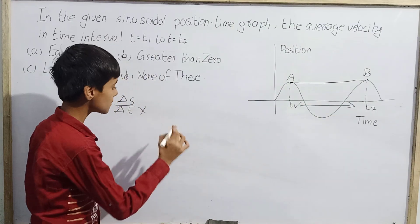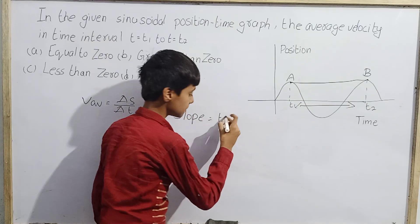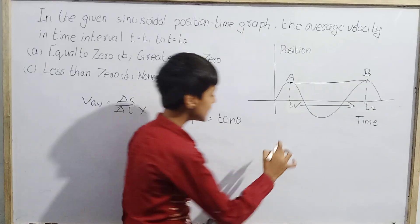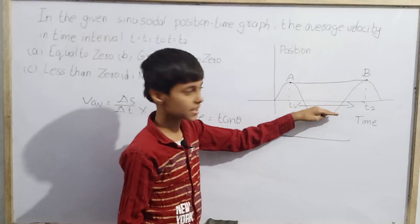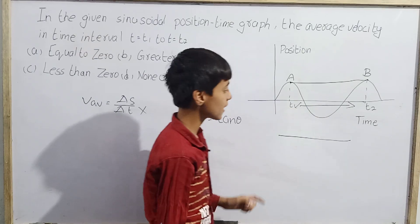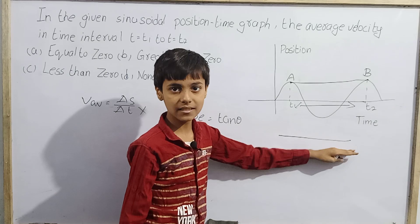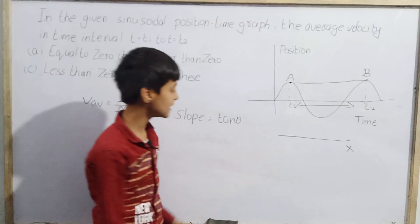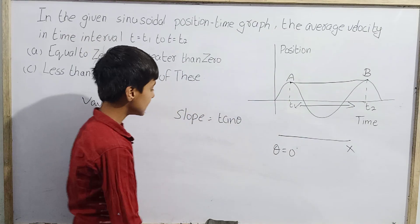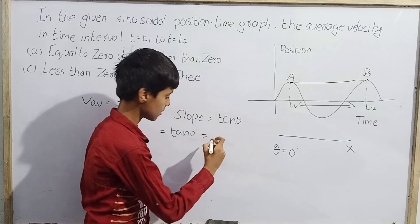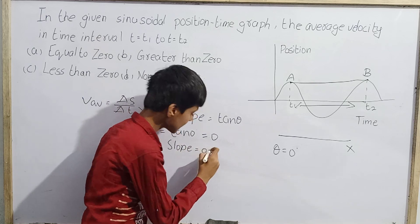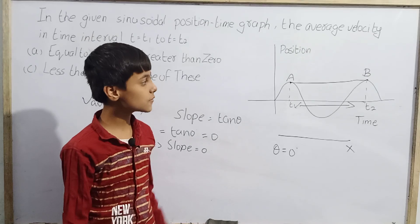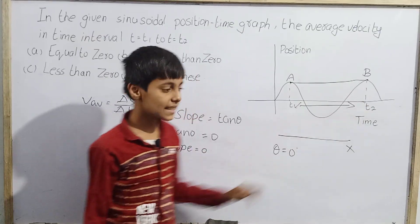In a position-time graph, the slope of a chord over any time interval equals the average velocity. The slope = tan θ, where θ is the angle the chord makes with the x-axis. Looking at the chord from t1 to t2 on the sinusoidal graph, it is horizontal, so θ = 0°.